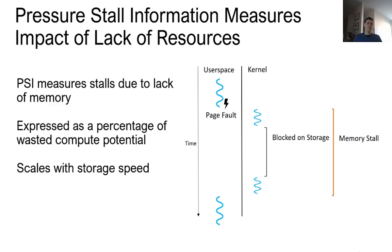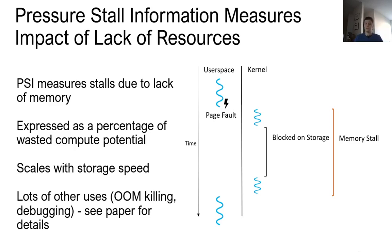A nice property of PSI is that it scales with storage speed. If you have a slower storage device, the time blocked on storage is longer, so the memory stall is longer and pressure increases. This is why we prefer pressure stall information to track resource impact rather than counters like major page faults, which sometimes indicate issues and sometimes don't, depending on storage device speed. PSI has also been implemented for other resources like compute and IO, and it's all upstream in the Linux kernel, with other uses like user-space killing under high pressure or debugging resource shortage issues.